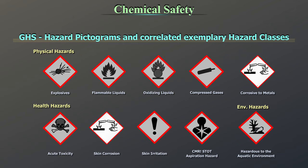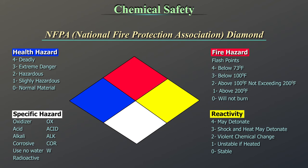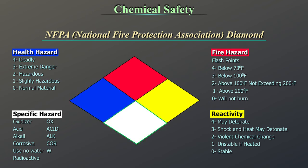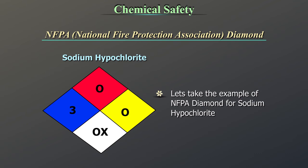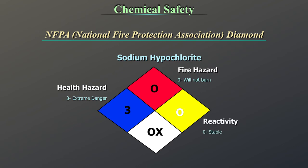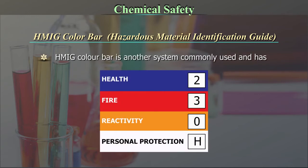The NFPA Diamond — National Fire Protection Association. Another warning system is NFPA. There are four diamonds within one large diamond: red indicates fire hazard, blue indicates health hazard, white indicates a specific hazard, and yellow indicates reactivity. For example, the NFPA diamond for sodium hypochlorite — a commonly used chemical in all labs — shows category 3 for health, zero for fire and reactivity, and oxidizing under specific hazard.